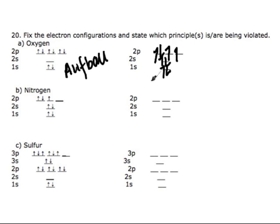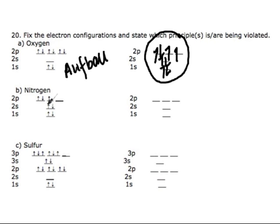So this is the correct electron configuration for oxygen. Moving on to nitrogen — let's see how the orbitals are being filled. The 1s is completely filled, the 2s is filled, and for 2p we have 3 electrons. However, one orbital is completely filled while another orbital of the same energy has no electrons at all. This violates Hund's rule.